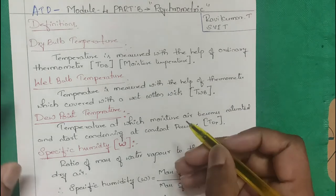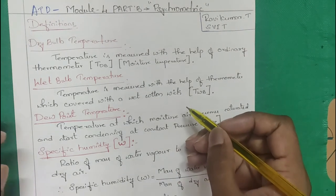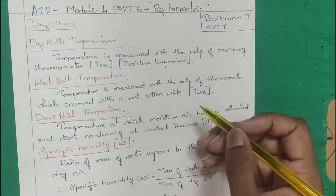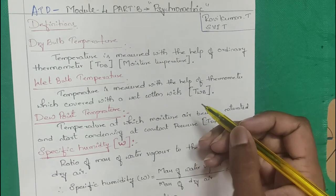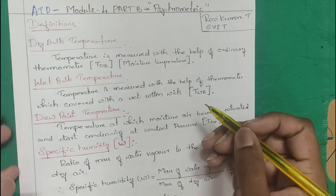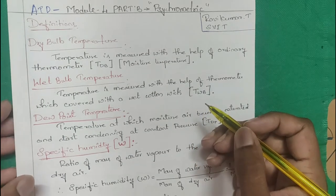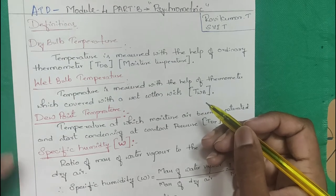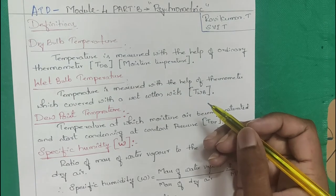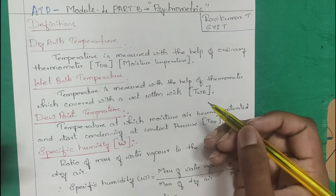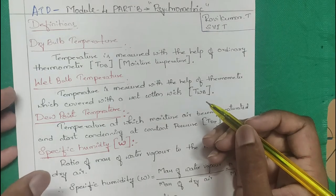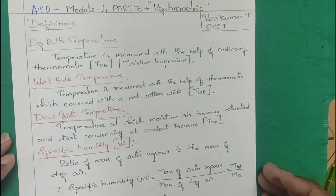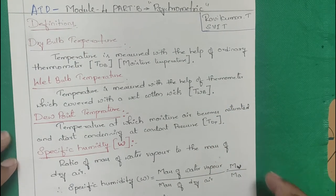Today I'll explain psychrometry — how to solve problems without using a psychrometric chart, using the properties of moist air such as pressure, temperature, dry bulb temperature, wet bulb, and enthalpy. Before doing that, we shall see some definitions.